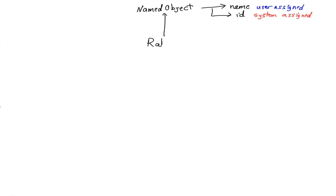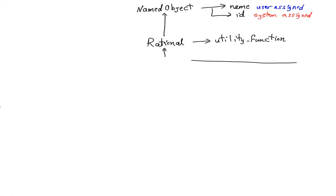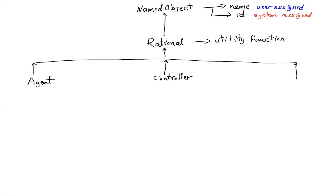Some named objects are also rational objects. What this means is that it exports a utility function property which you can read or set. This utility function property can be any callable, but is most likely one of the utility functions defined in the utilities module, or any utility function you define yourself. So what are the things that can have utility functions? What are these rational objects? There are three types: agent, and negotiators.